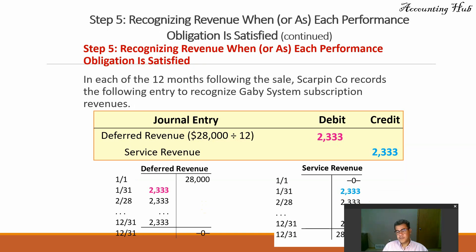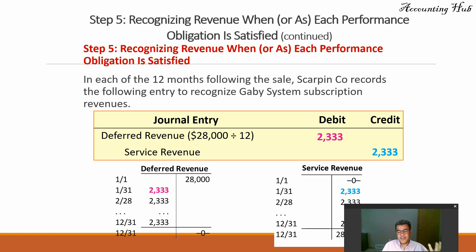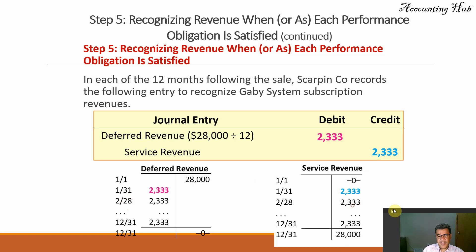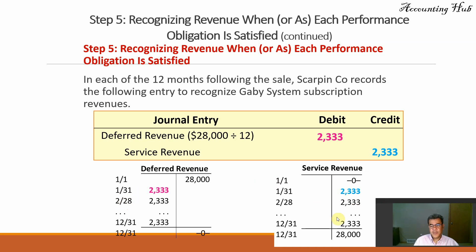Service revenue — the same — $2,333.33 per month. So deferred revenue $28,000 divided by 12. Our allocation is always per month, not per days. Per days, January would be greater than February, and so on. So we allocate it over months to make it smooth. And then service revenue is my credit, so the same — $28,000 over 12 months.